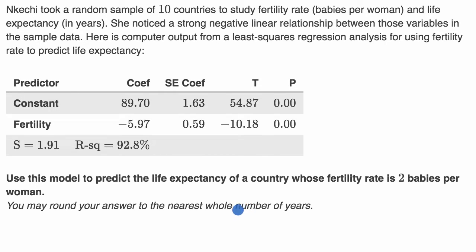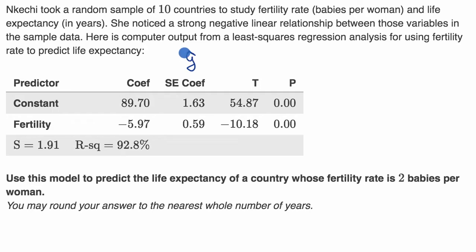All right, now let's do this together. This computer output is giving us a lot of data — more than we need to do this prediction — but it gives us what we need to know the equation for a regression line. The general form of a linear regression line would be our estimate: ŷ (that little hat means we're estimating our y value) is equal to our y-intercept plus our slope times our x value.